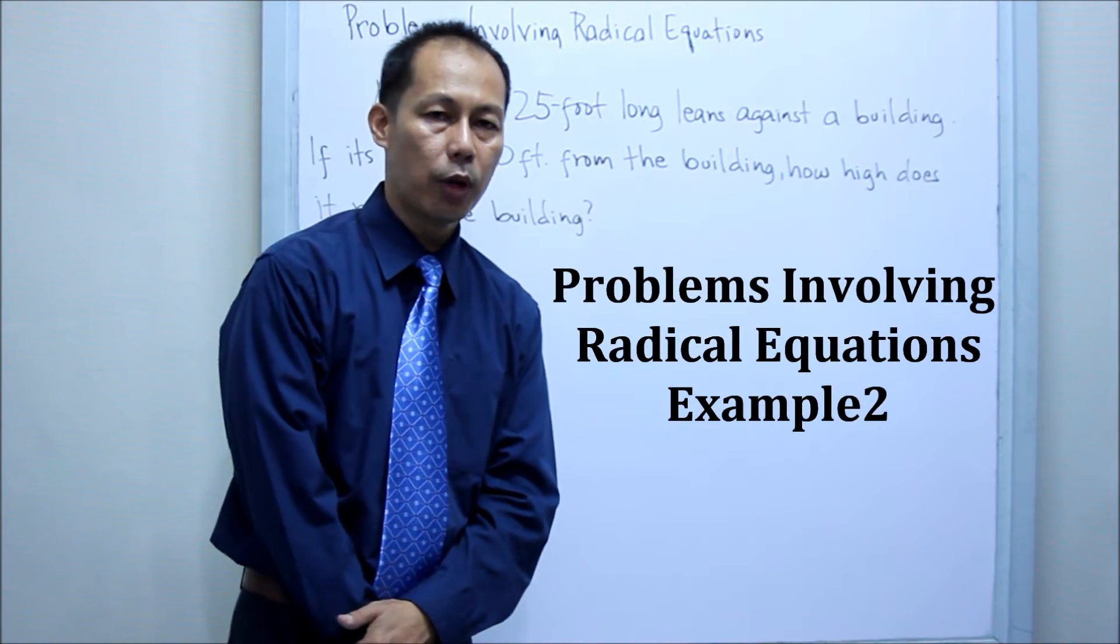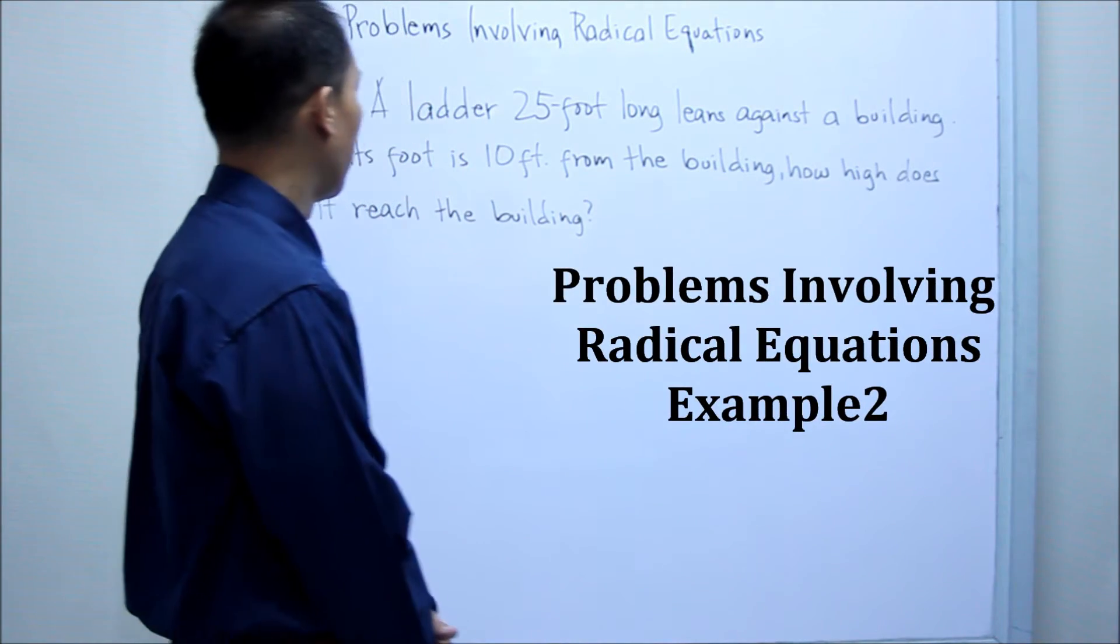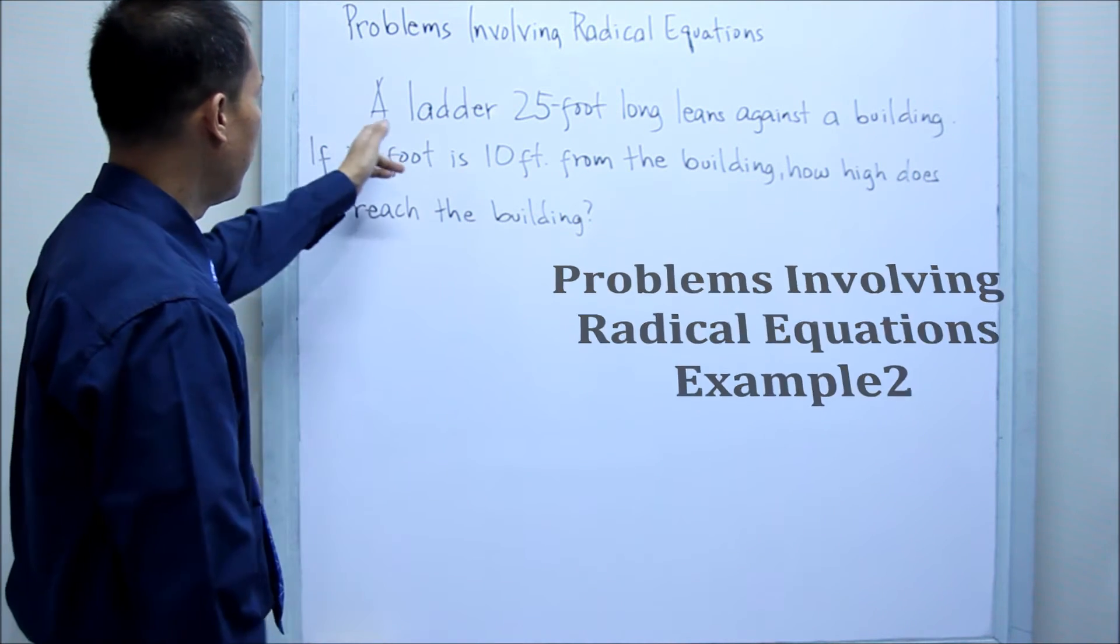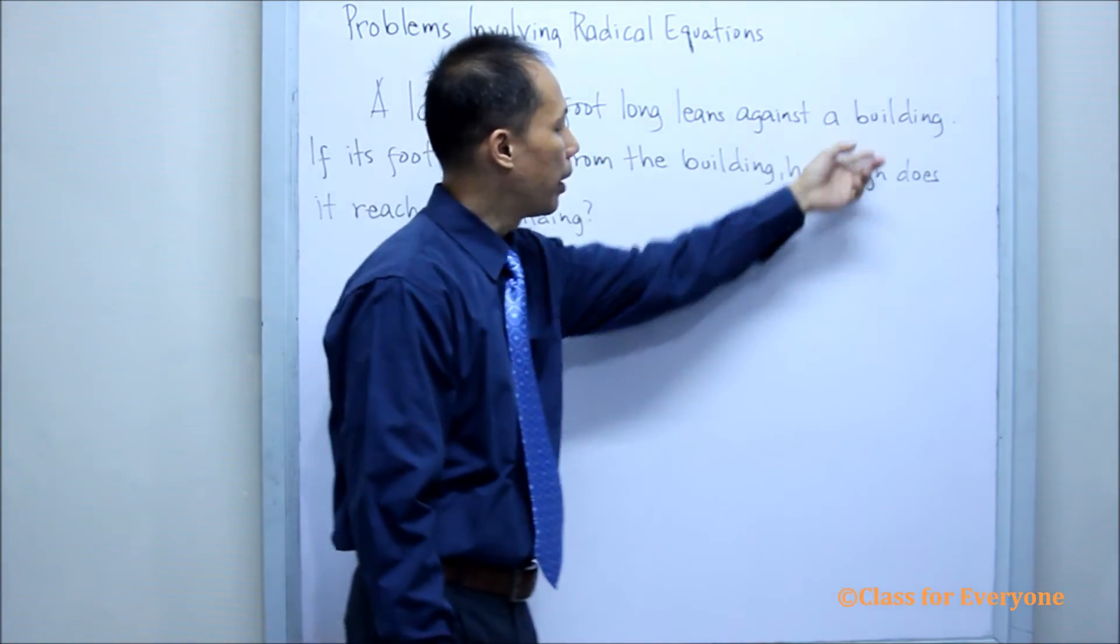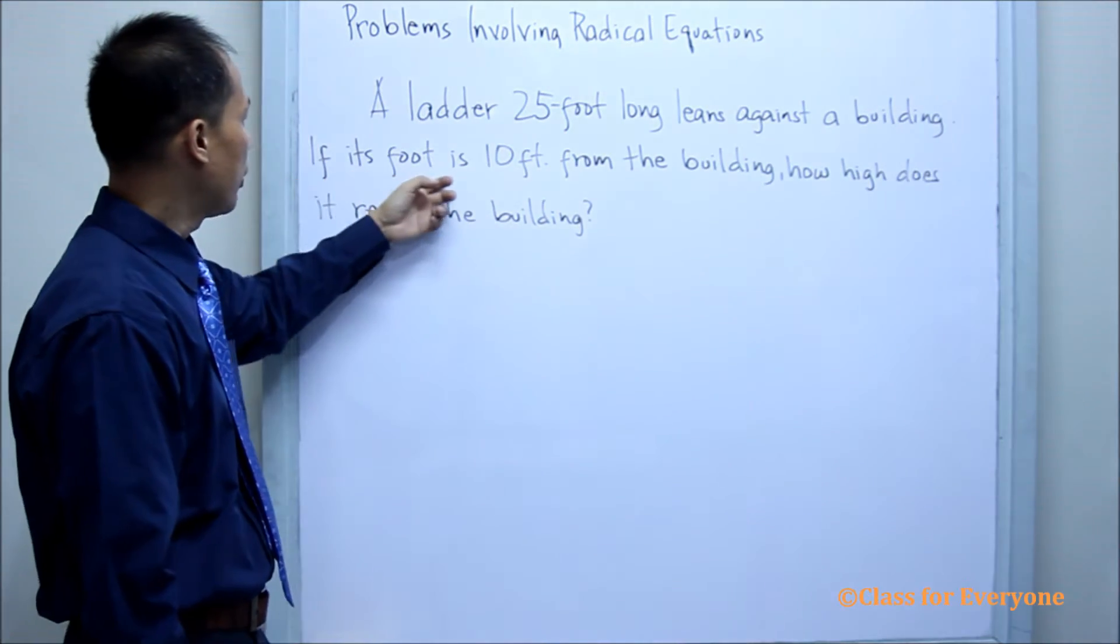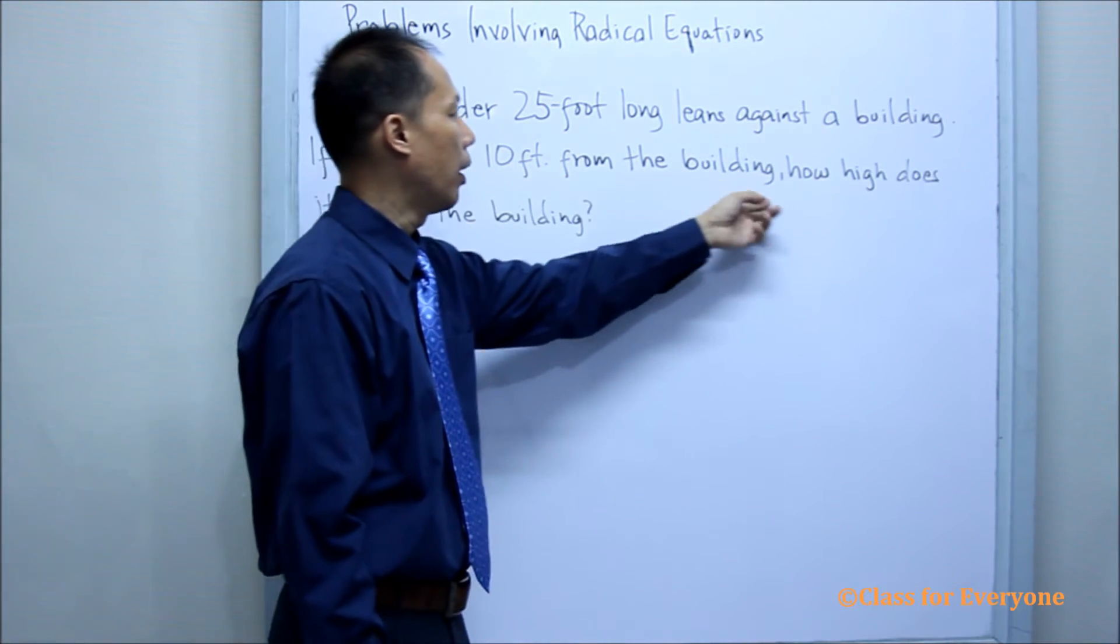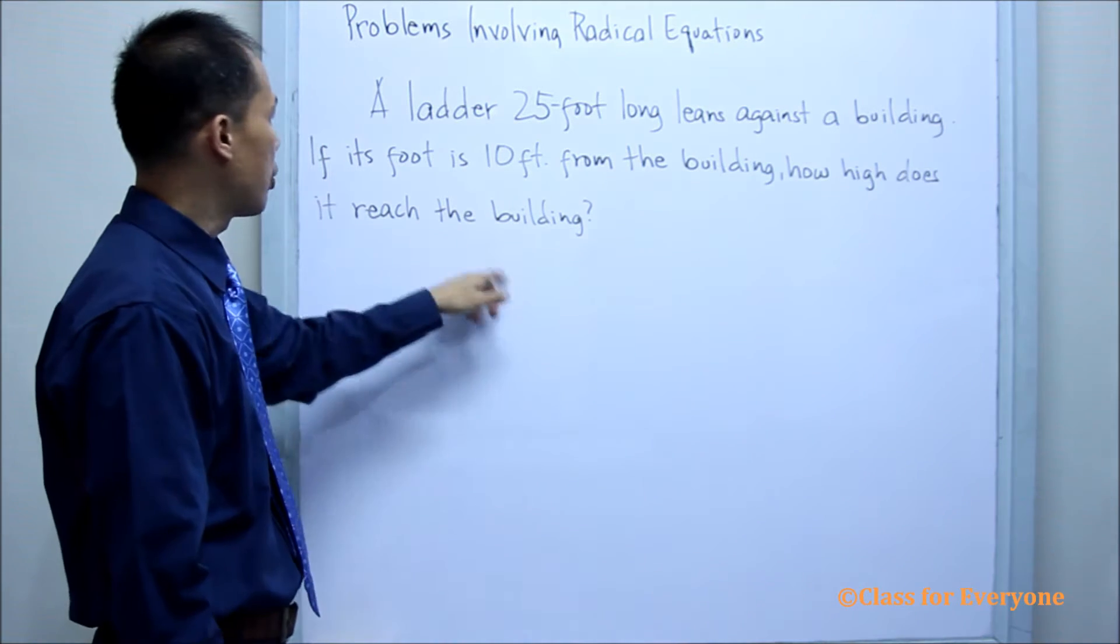Now, we are going to solve our problem involving a ladder. A ladder is 25 foot long leans against a building. If its foot is 10 feet from the building, how high does it reach the building?